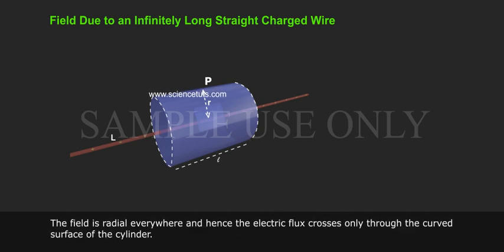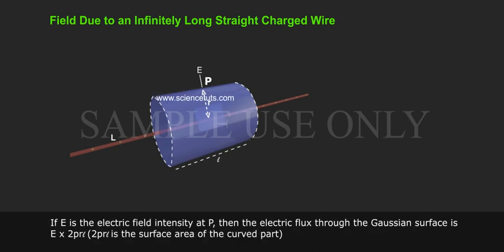The field is radial everywhere and hence the electric flux crosses only through the curved surface of the cylinder. If E is the electric field intensity at P, then the electric flux through the Gaussian surface is E·2πRL. 2πRL is the surface area of the curved part.